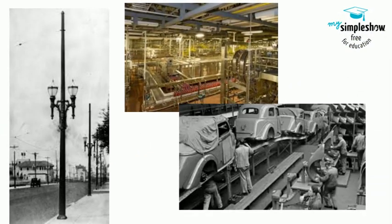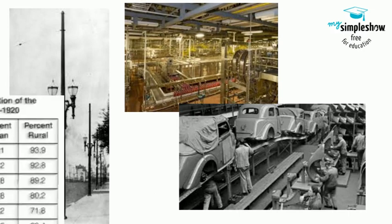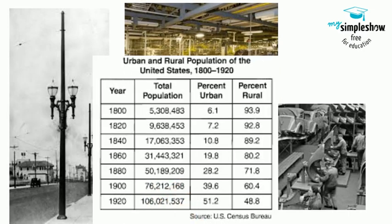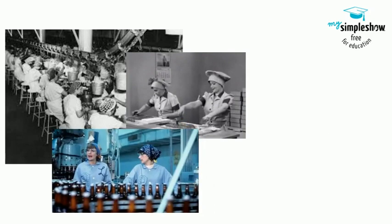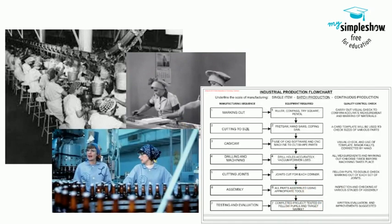Being able to run a factory 24 hours a day meant an even larger boom in mass production, leading to a surge in labor jobs. To make even more goods in an efficient manner, entrepreneurs installed the assembly line, which would see one worker doing one task throughout their shift and passing the object down to another worker who had another task until the product was complete.